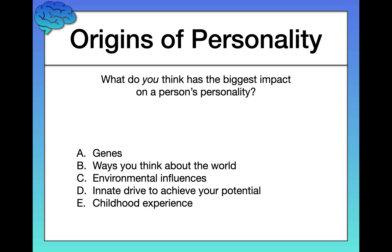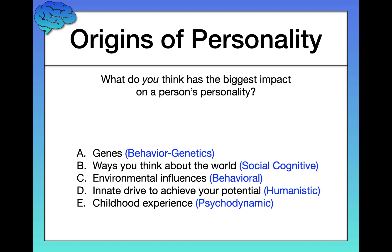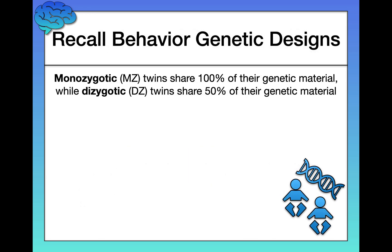Or E: your childhood experiences. Regardless of how you responded, there is a theory in psychology — or a perspective — that corresponds to each of these different answers. We're going to talk about just a couple of them today, starting with behavior genetics.